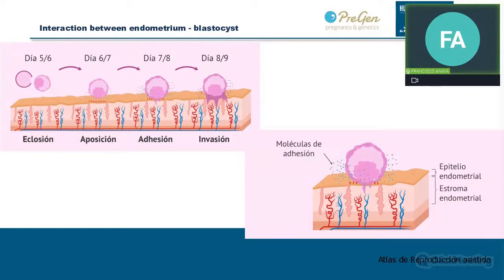Both actors — embryo and endometrium — must interact with each other in order to achieve implantation that continues until a live birth. In natural conception, sperm and oocyte must find each other in the fallopian tube where conception occurs. The embryo then travels during three or four days along the tube to the uterus. It must reach the endometrial cavity at the blastocyst stage, and then the chemical process of implantation begins, involving many genes and molecules — including hatching, apposition via adhesion molecules, adhesion with pinopodes, and finally invasion.